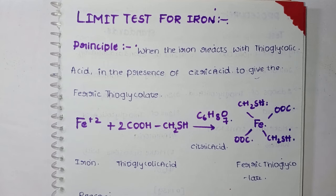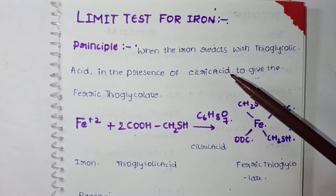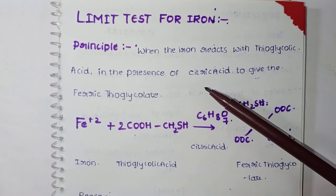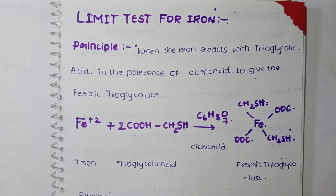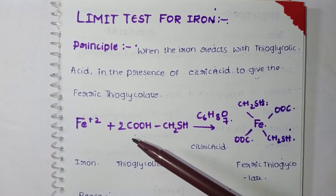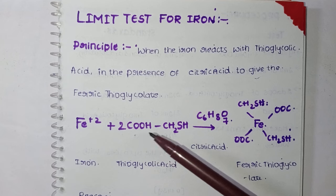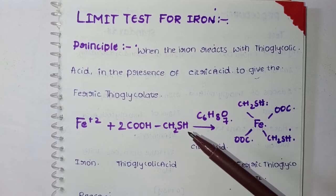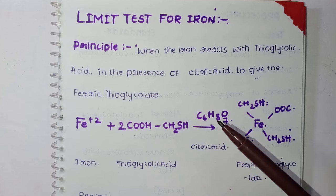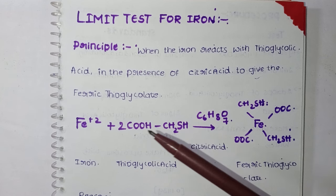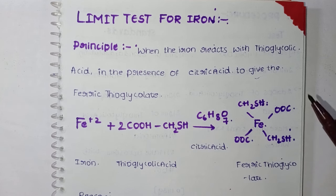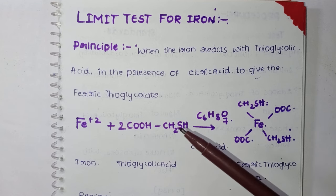First, the principle: when iron reacts with thioglycolic acid in the presence of citric acid, it gives ferric thioglycolate. Iron Fe²⁺ reacts with thioglycolic acid - which has a carboxylic group, two COOH groups plus CH₂SH - in the presence of citric acid (C₆H₈O₇) to give ferric thioglycolate. Two moles of 2COOH become OOC and two CH₂SH, giving rise to ferric thioglycolate.